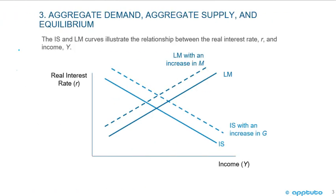The IS and LM curves illustrate the relationship between the real interest rate R and income. On the Y axis we have the real interest rate, and on the X axis we have income. We can see that the LM curve is moving from the dashed line to the solid line, and the solid line reflects a higher real money supply than the dashed LM line.